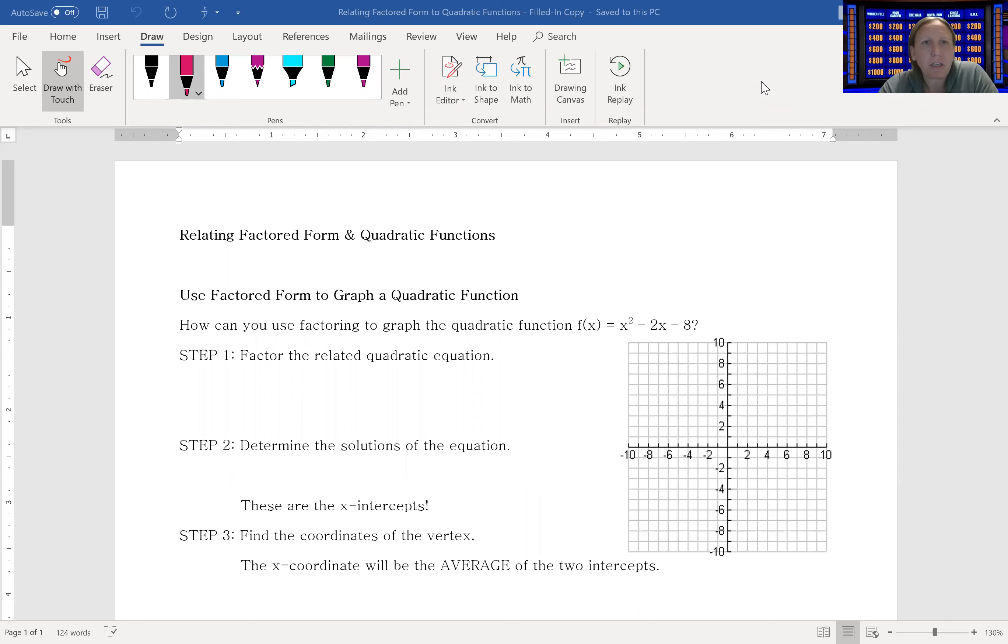The first one says use factored form to graph a quadratic function. Now to me this is a little silly because honestly if I gave you something like f(x) = x² - 2x - 8, you can just find the axis of symmetry and graph it like normal.